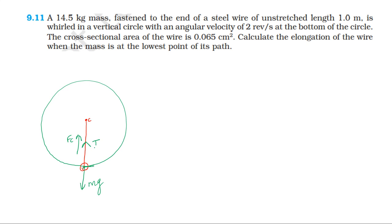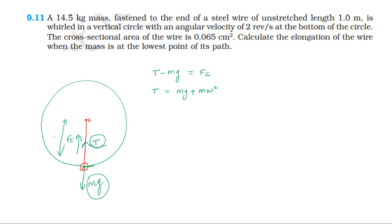At the lowest point, centripetal force is provided by the resultant of tension and mg. Tension acts toward the center, mg acts downward. So tension minus mg equals centripetal force, which gives tension equal to mg plus centripetal force.